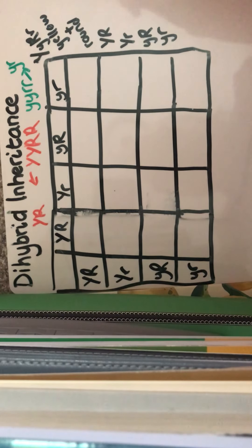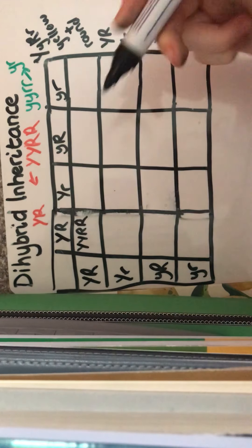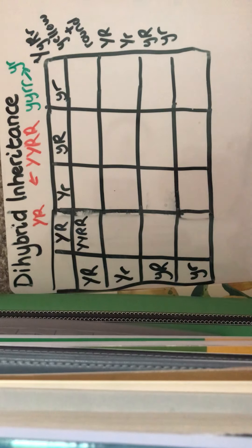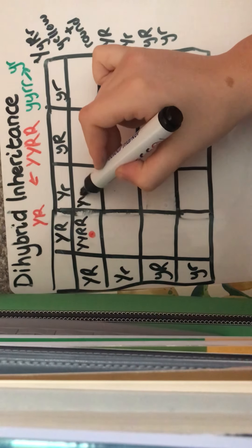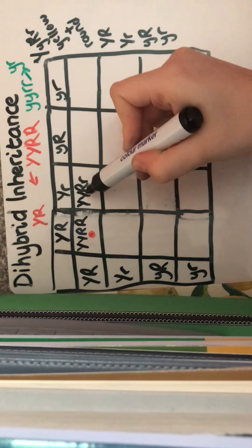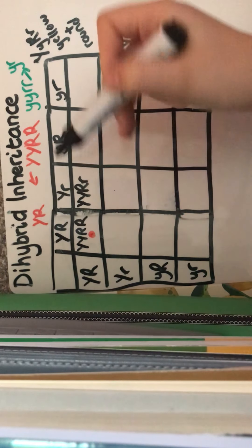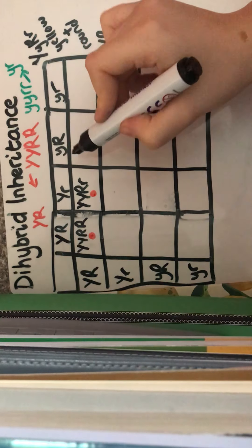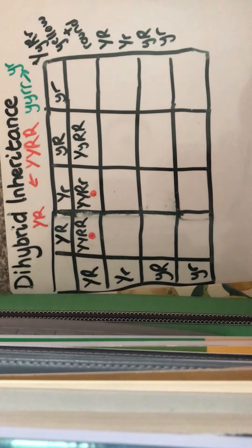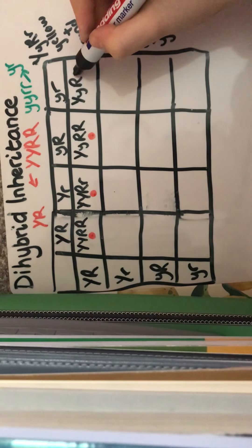We're going to cross these to find out the genotypes in the second generation. The first cell would be YY RR, which is homozygous dominant, so we know they are going to be yellow and round. We're going to pretend the red pen is yellow because I haven't got a yellow pen. The next cell is homozygous dominant for yellow and heterozygous for round, so again it's going to be yellow and round. The following cells are also going to be yellow and round.